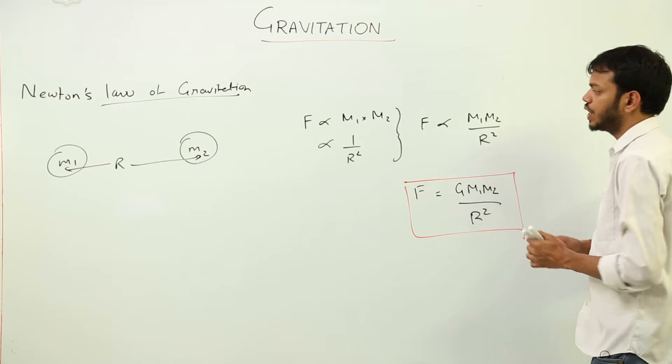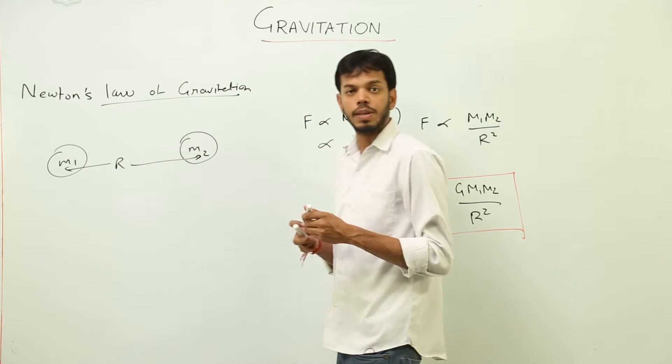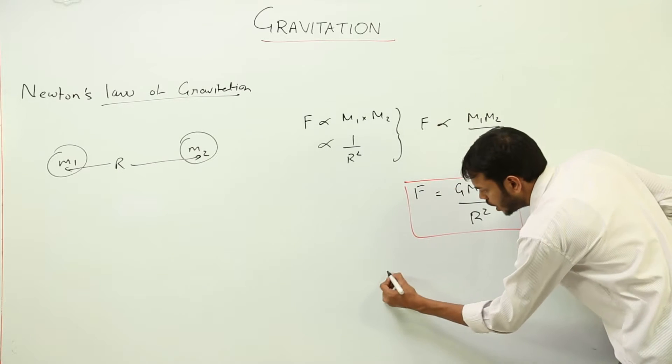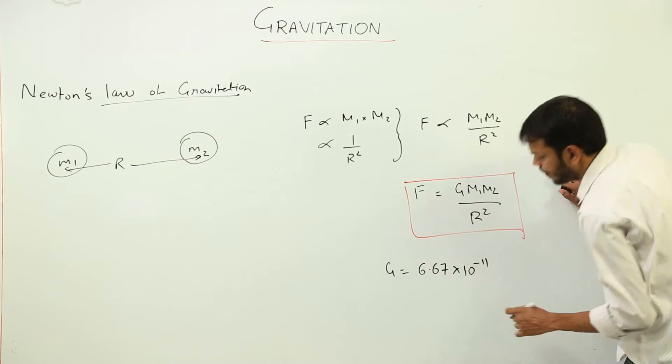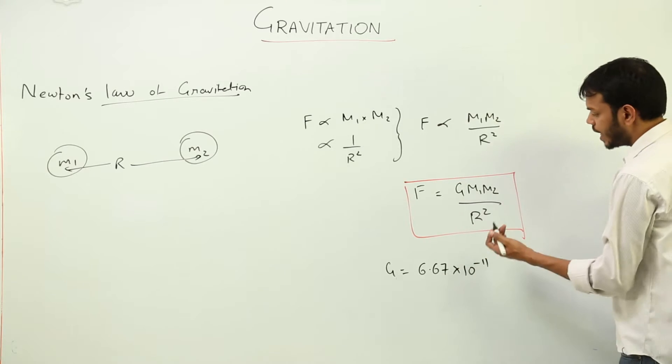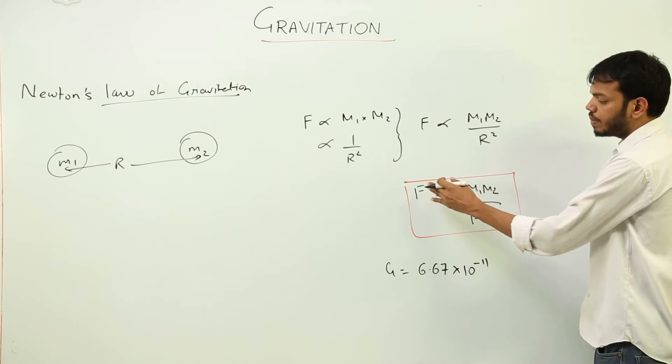So now we have an equation. What else can we say about G? First of all, there must be some numerical value associated with G. G is 6.67 times 10 to the power minus 11. This is the numerical value and the SI unit would be—leave G here and take all the terms on that side.